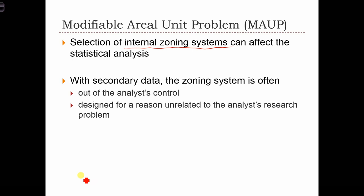That's one example of how an arbitrary zoning system wasn't designed for the research question I'm trying to investigate. As secondary research data analysts, we really struggle with this problem all the time, and usually there's no perfect solution. You just need to use your understanding of your research question and the levels of aggregation available to you to come up with the best possible choice. Generally speaking, the lower the level of aggregation you can retrieve the data at, the better — or the more flexibility you can have with creating your own units from that lower level of aggregation.